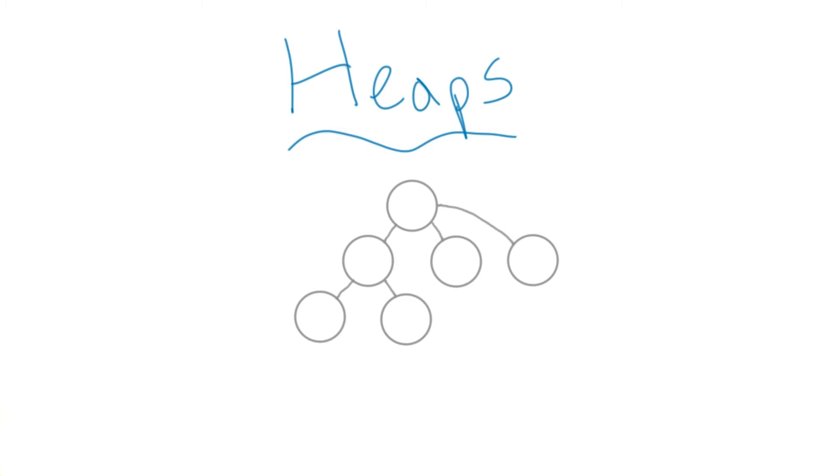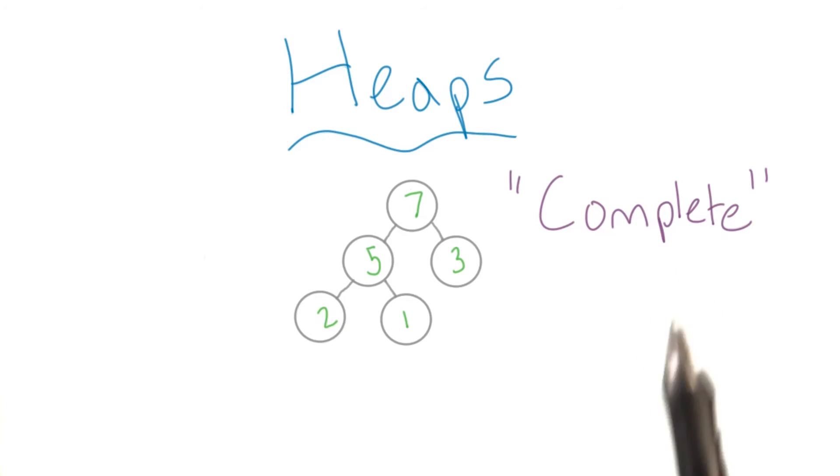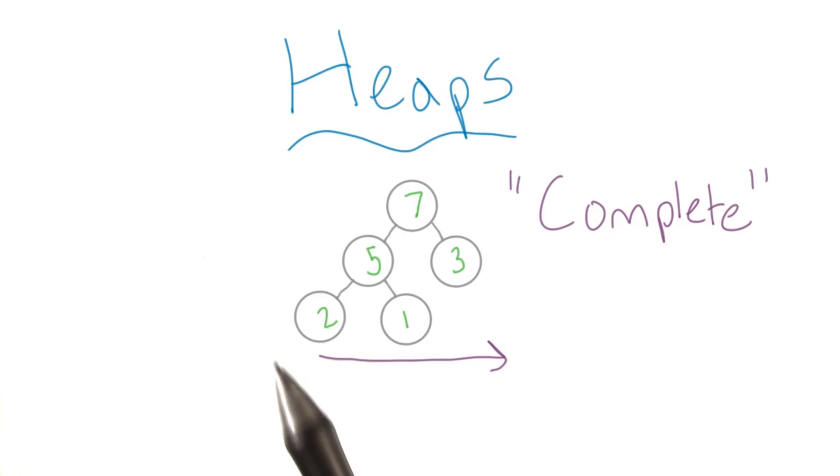Here I'm going to focus on a max binary heap. So we're going to keep the two children rule, and the root will be the maximum element. In addition, a binary heap must be a complete tree, meaning all levels except the last one are completely full. If the last level isn't totally full, values are added from left to right. The rightmost leaf will be empty until the whole row has been filled.